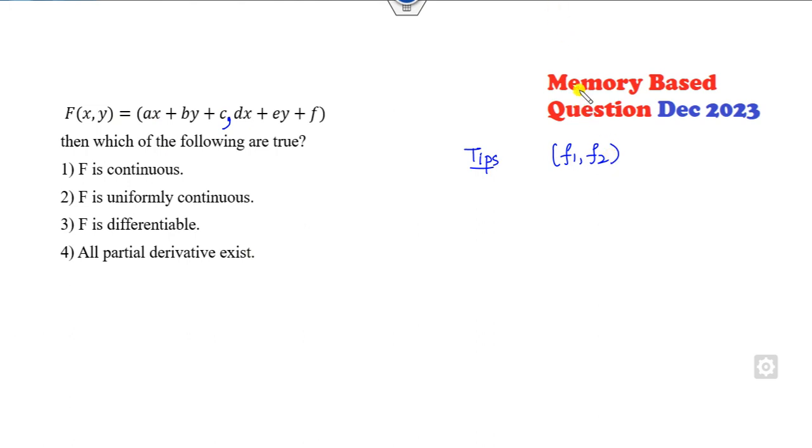Look at this another one. A function is given here. As I gave you the earlier tip: if you have functions f₁ and f₂, if both are continuous, then this capital F is continuous. You can see both are polynomials, so every polynomial is continuous. So it is continuous.